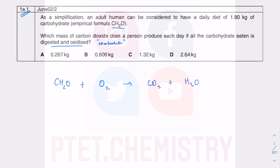They want the mass of carbon dioxide. This is what you want, and 1.80 kg of carbohydrate is what you're given. We'll work in kilograms. Using the mole ratio: moles of CO₂ over moles of CH₂O. These are mole calculation questions — you can check out my other playlist under moles and stoichiometry concepts.